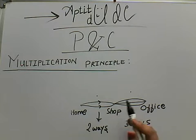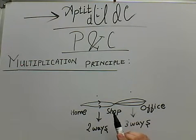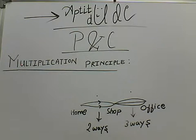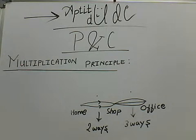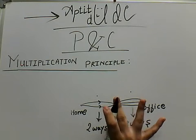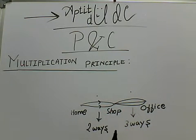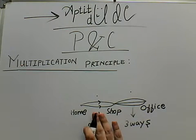Now we actually need to find the number of ways in which I can get to the office from my home, so here I need the multiplication principle. The multiplication principle says that for getting the number of ways in which the whole job can be done, we need to multiply the number of ways in which the individual sub-jobs can be done.